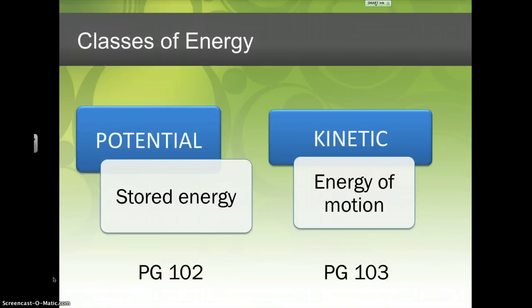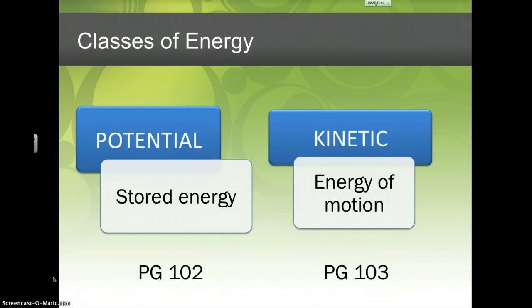So for our notes today, what I'd recommend you do is put your potential energy on page 102 and your kinetic energy on page 103. These notes are your choice — you can draw pictures, summarize stuff, whatever you'd like. But your goal is when you come into class that you're able to talk about the different types of potential and kinetic. If you don't know it 100%, that's fine, but you want to have a basic understanding so when we start the labs and discussions, you're able to participate.